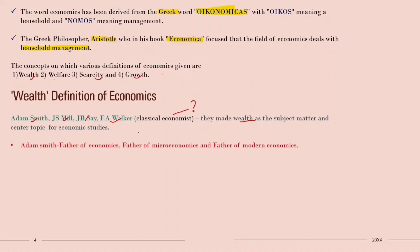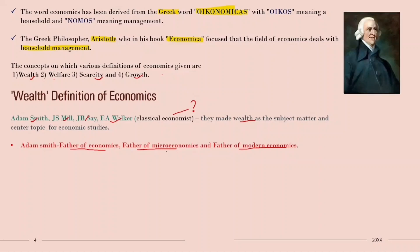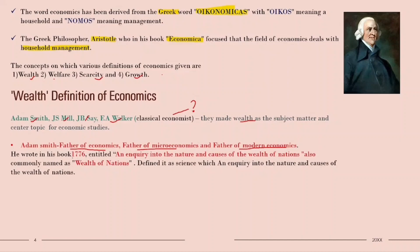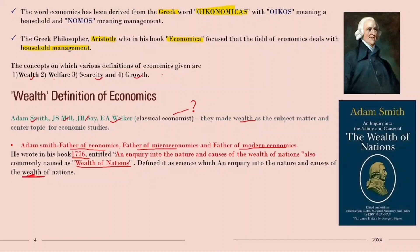Adam Smith is the father of economics, father of microeconomics, and also father of modern economics. Adam Smith wrote a book in 1776 entitled 'An Inquiry into the Nature and Causes of the Wealth of Nations,' commonly called Wealth of Nations. In it, he defined economics as an inquiry into the nature and cause of the wealth of nations, focusing on wealth.